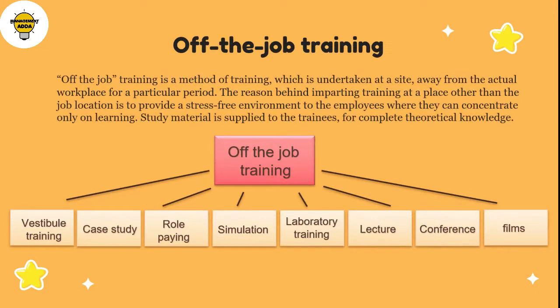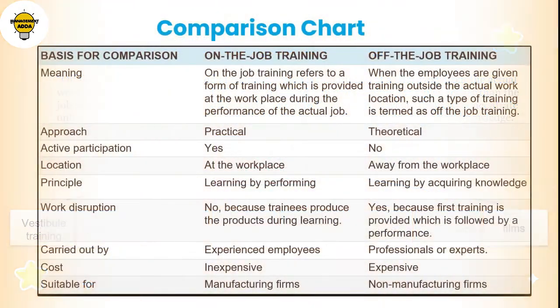Off-the-job training is a training where employees are provided training away from the job place — not at the place where they are actually doing the work or near the organization. On-the-job training is provided at the workplace; the trainees produce things while learning. Whereas in off-the-job training the trainees are away from the work environment, which eliminates stress, frustration and the bustle of day-to-day work.